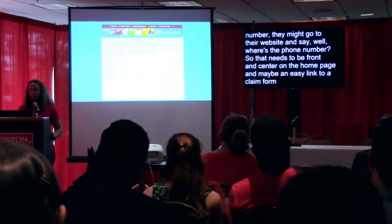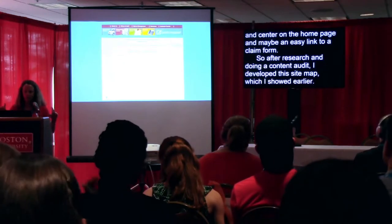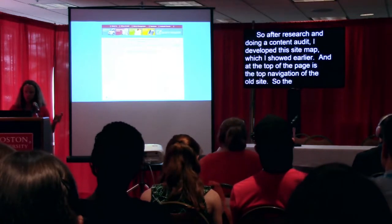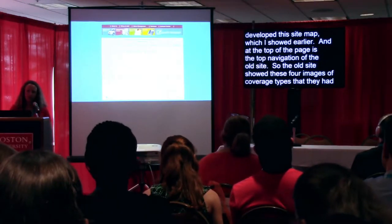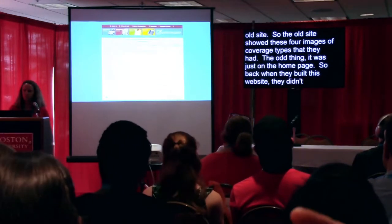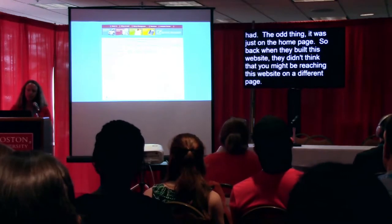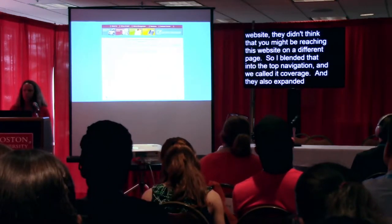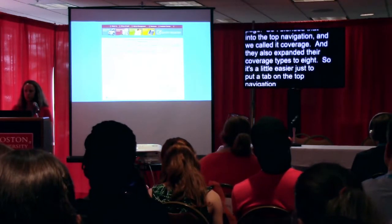After research and doing a content audit, I developed a site map. At the top is the old site's top navigation. The old site showed four images of coverage types — but oddly, only on the homepage. They didn't think about visitors reaching the site on a different page. So I blended that into the top navigation under 'Coverage,' and they also expanded their coverage types to eight — easier to show as a dropdown.